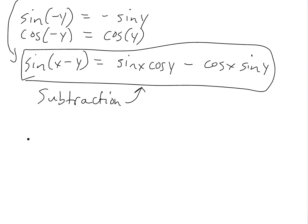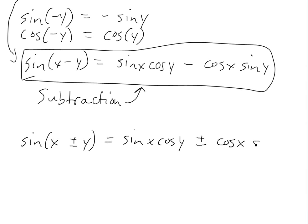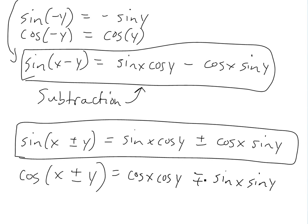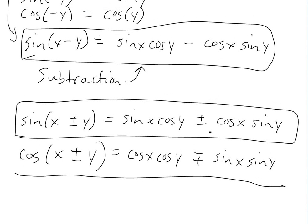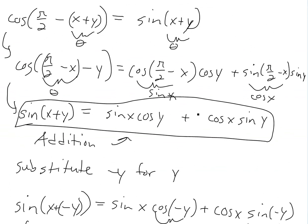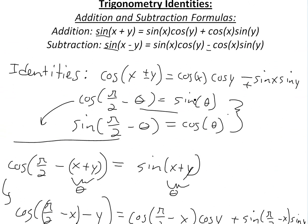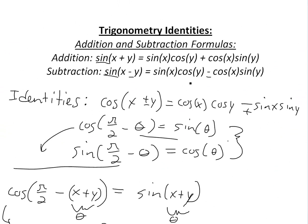Putting them all together, an easy way of writing it: sine of x plus or minus y equals sine x cosine y plus or minus cosine x sine y. And similarly for the cosine addition and subtraction rules: cosine of x plus or minus y equals cosine x cosine y minus plus sine x sine y — the signs are opposite. Thanks for watching, hopefully you learned something, and we'll use this to do things like the derivative of sine x. Stay tuned for another Math Easy Solution.